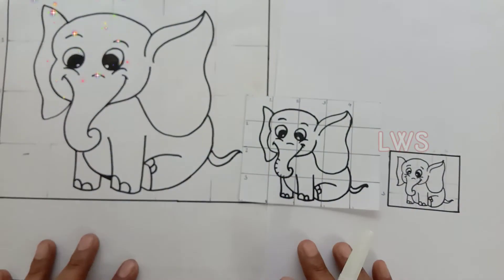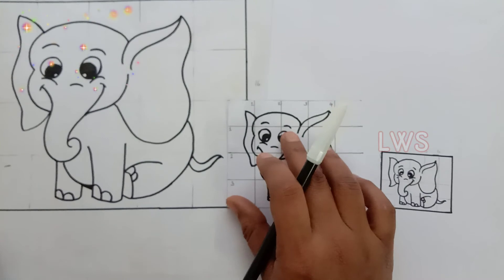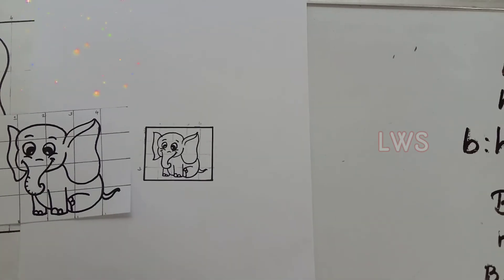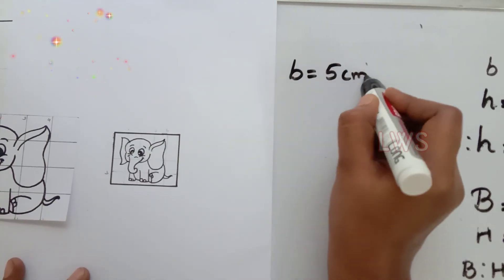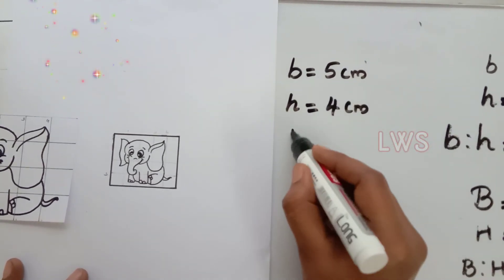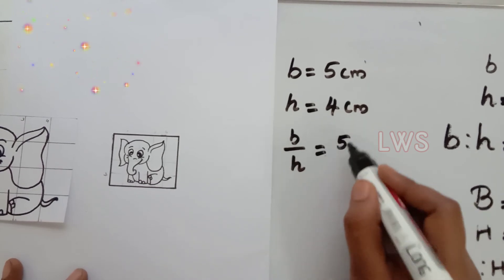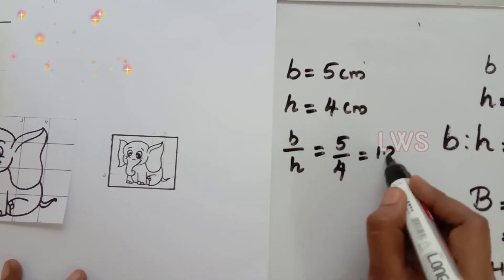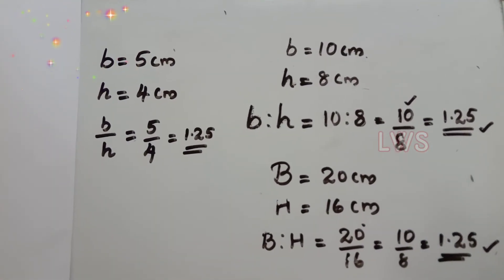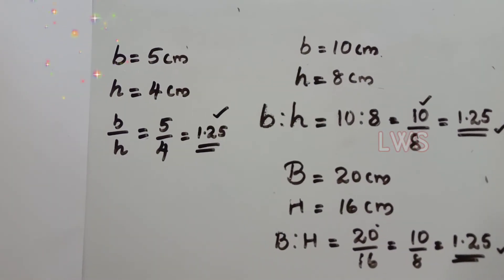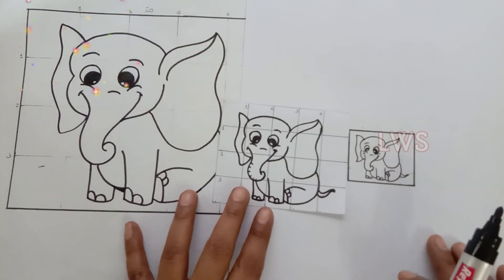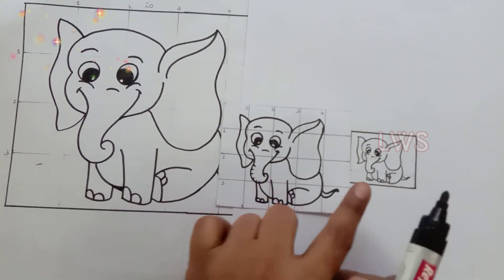Using the same technique I drew another picture but with a reduced size. Here also we can calculate the base to height ratio. Base is equal to 5 cm, height is equal to 4 cm, and the ratio is 5 divided by 4, which equals 1.25. So we can conclude that we can change the size of any picture without any distortions as long as the ratio of base to height remains the same, or the proportionality constant is the same.